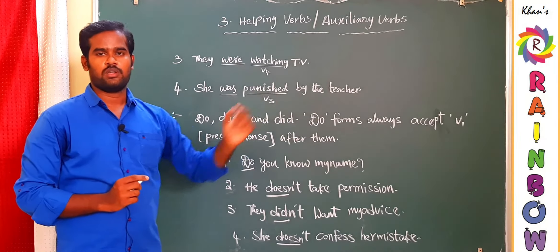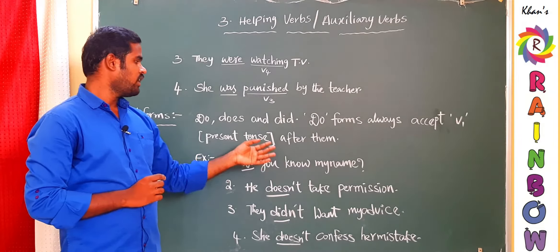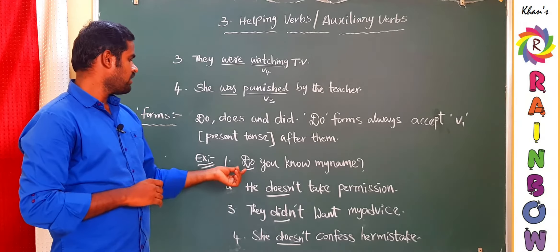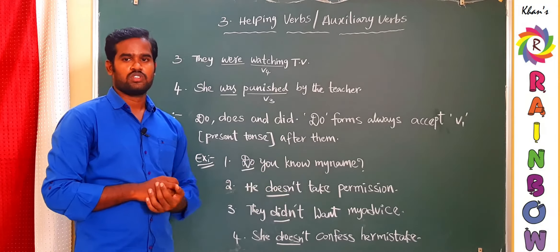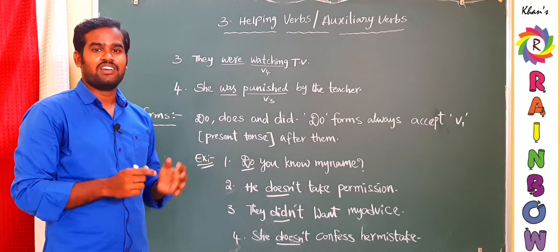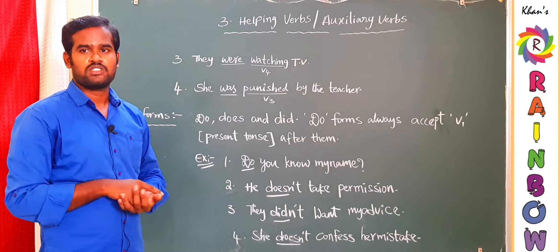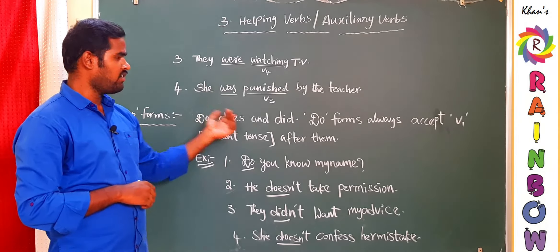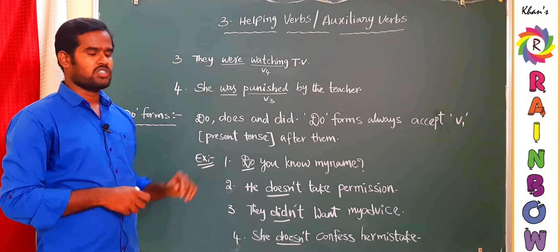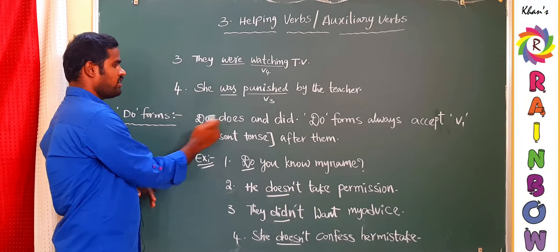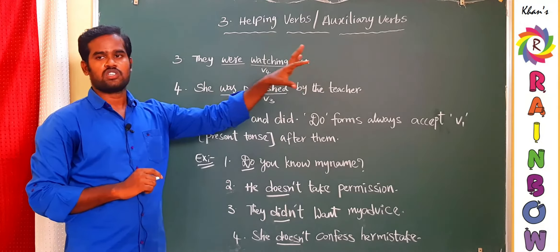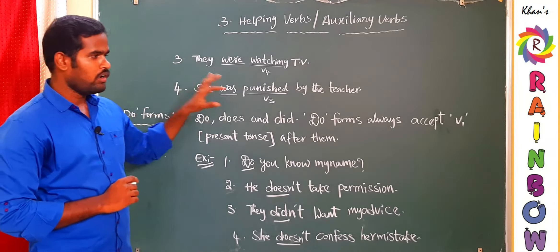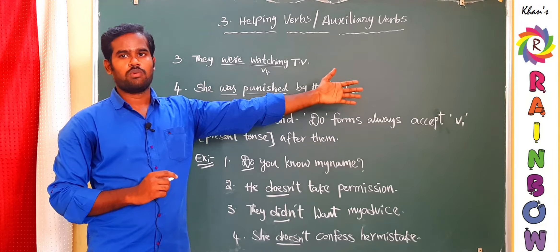There is one important rule for Do-forms: Do-forms always accept V1, that is present tense, after them. Most students use V2 after do-forms — for example, 'I didn't knew,' 'I didn't called,' 'I didn't ate,' 'I didn't took.' All such statements are grammatically wrong. Even though 'did' is past tense, after 'did' we should not use V2, because all Do-forms accept only V1.